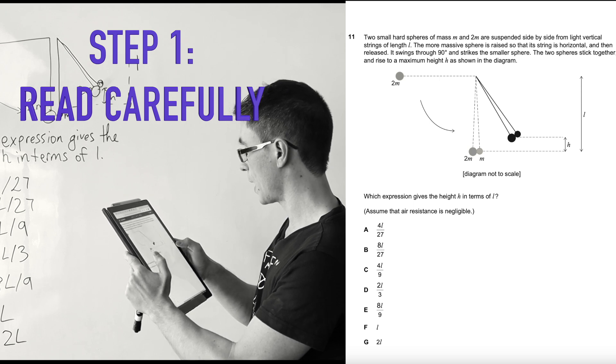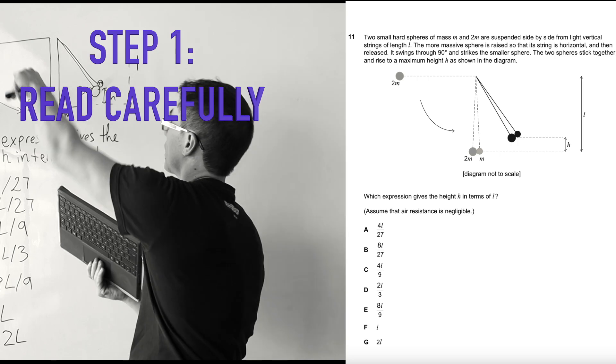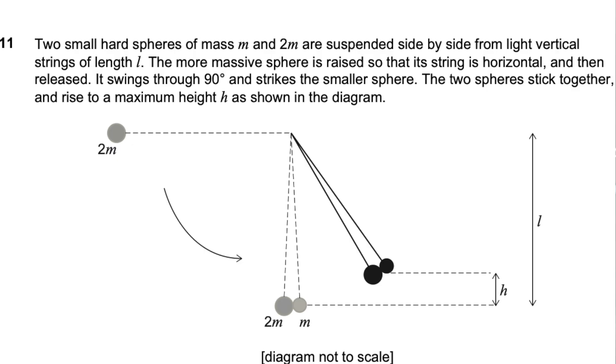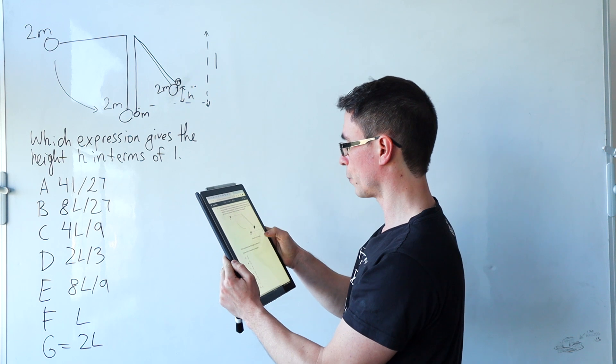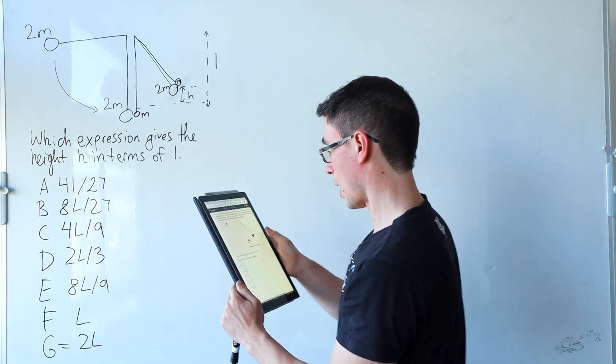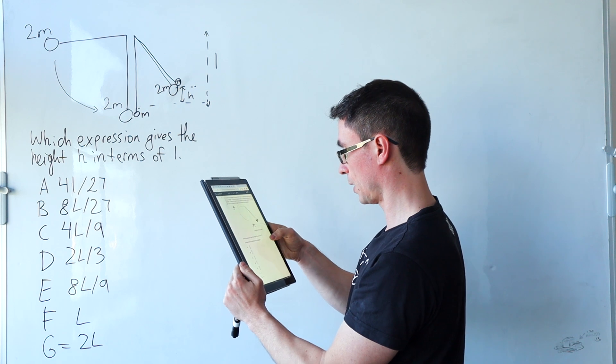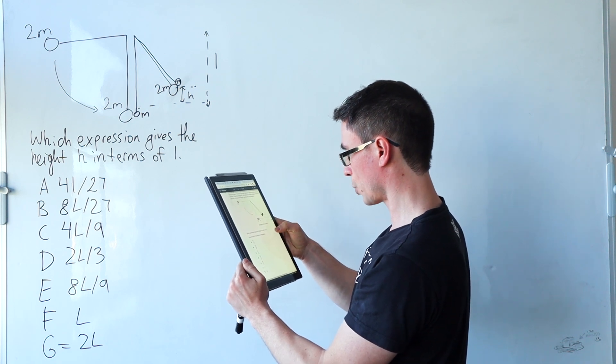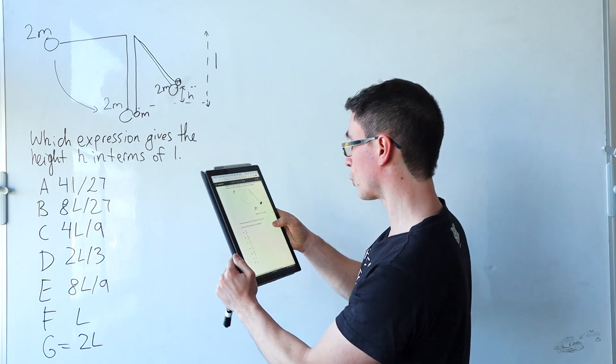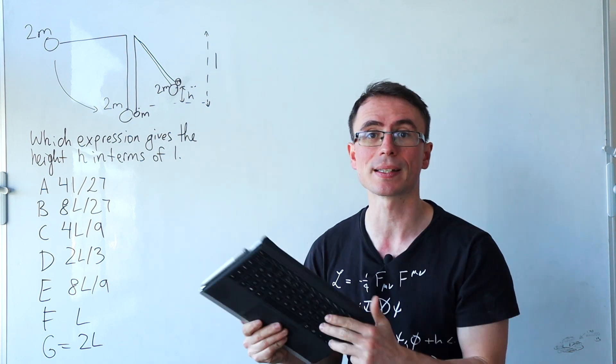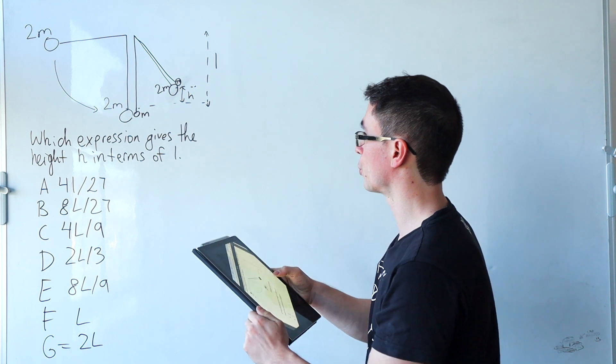Relate this to the diagram and if there's no diagram to sketch. It swings 90 degrees and it strikes the smaller sphere. The two spheres stick together and rise to a maximum height H as shown in the diagram. Which expression gives the height H in terms of L? We can assume that air resistance is actually negligible.